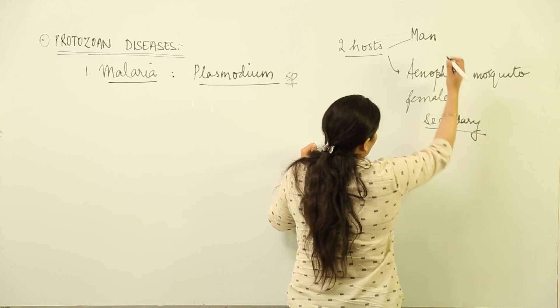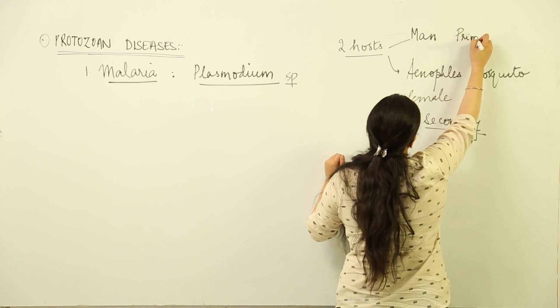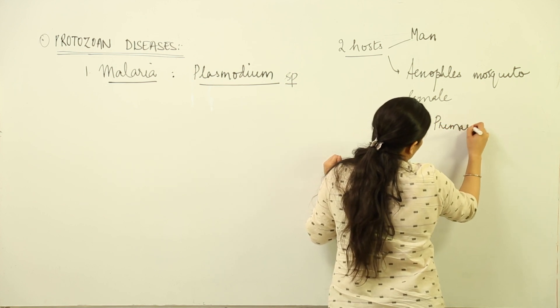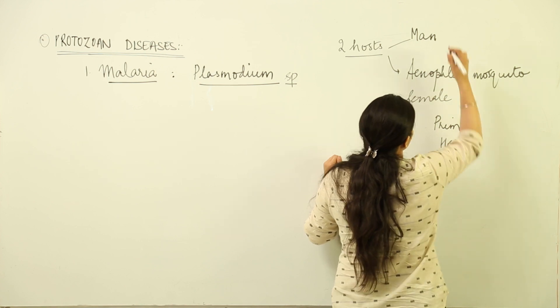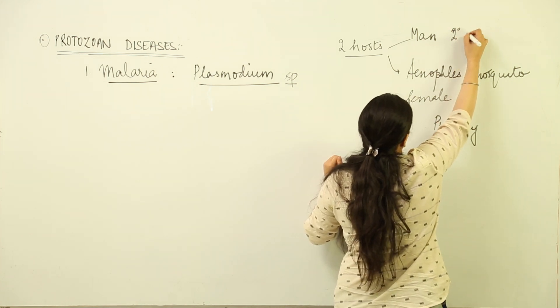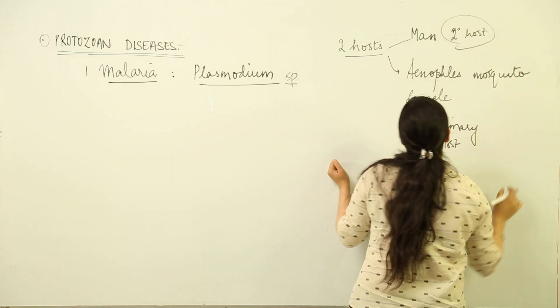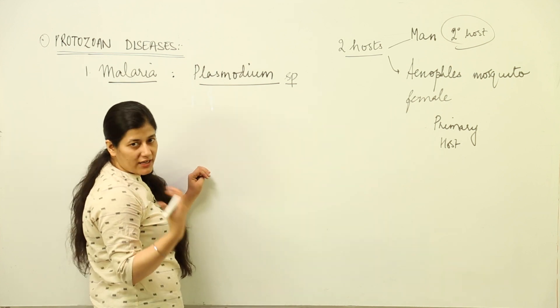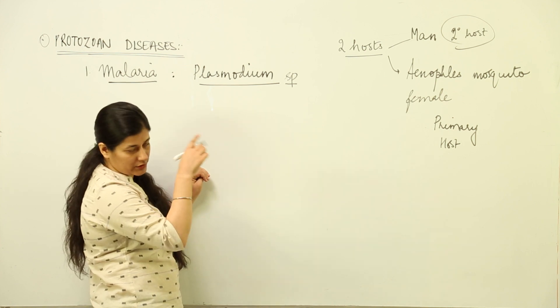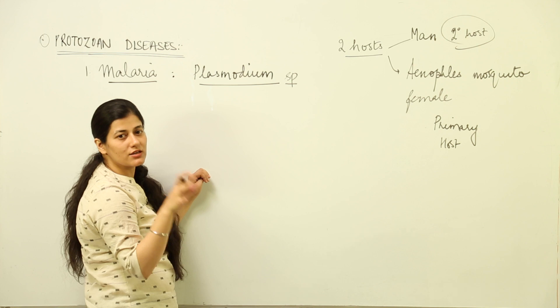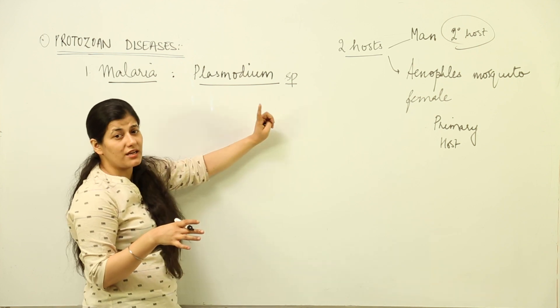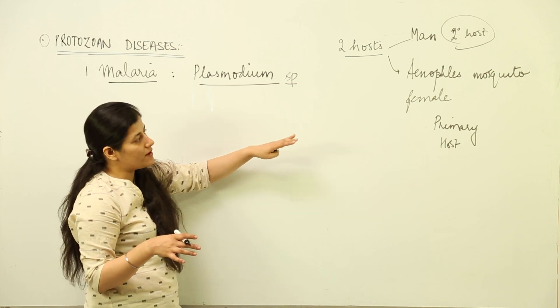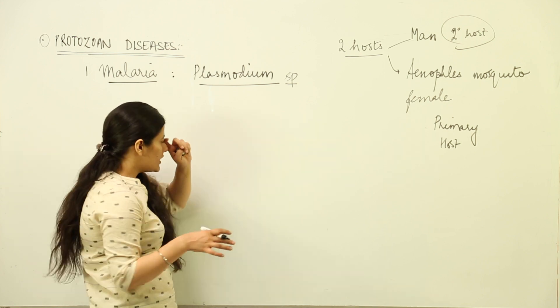Pardon me, it's opposite. Anopheles is the primary host and human is the secondary host. In terms of parasites with multiple hosts, the host in which the parasite undergoes sexual reproduction is the primary host, while the one where asexual reproduction occurs is the secondary host. Inside man, this Plasmodium carries out asexual reproduction and completes its sexual reproduction in the primary host, the Anopheles mosquito.